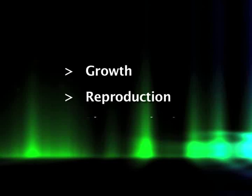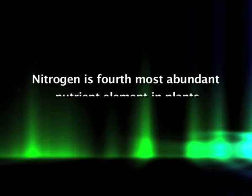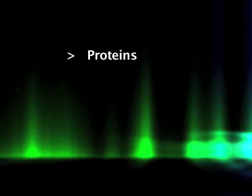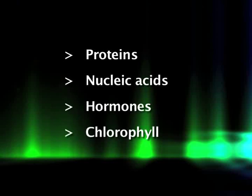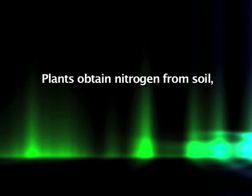Hello friends, welcome to this lecture on nitrogen uptake and assimilation. Let us start with the general account. Nitrogen compounds are found in all plant tissues where they play a key role in growth, reproduction, and photosynthesis. On a dry weight basis, nitrogen is the fourth most abundant nutrient in plants. It is an essential constituent of proteins, nucleic acids, hormones, chlorophyll, and a variety of other important primary and secondary constituents.